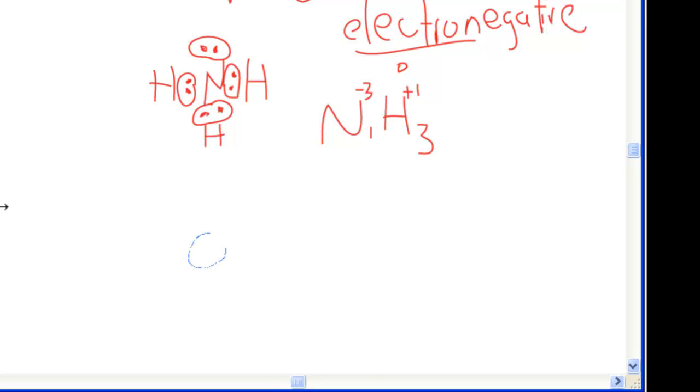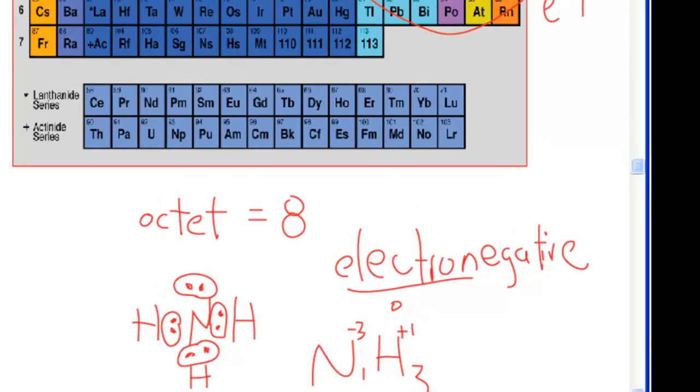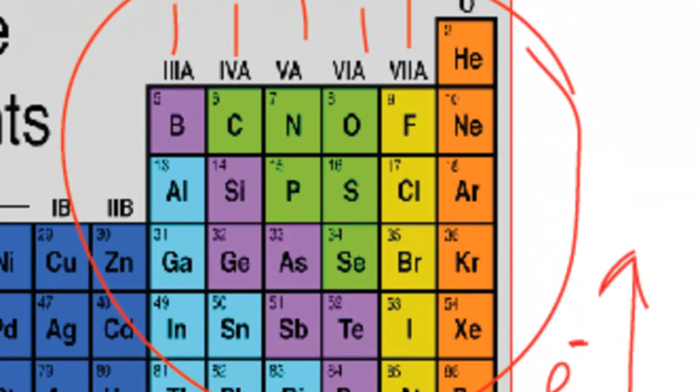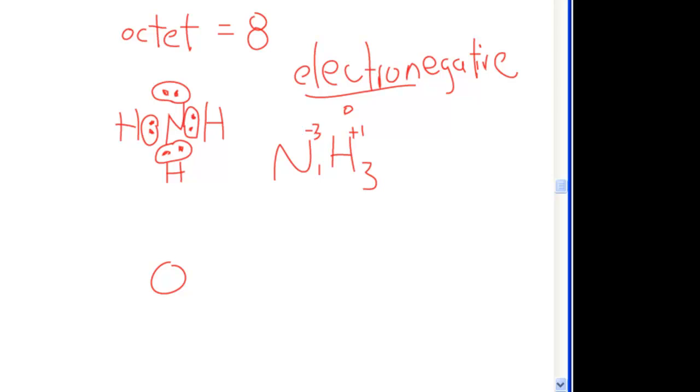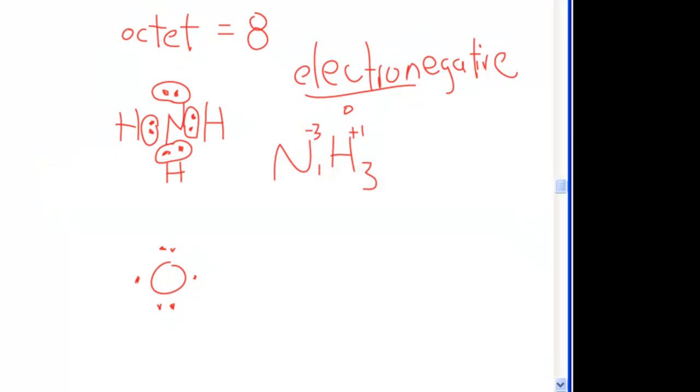Let's try oxygen, which is group six, right? How many valence electrons? Well, you guessed it, six. One, two, three, four, and the last two five, six, evenly distributed throughout the atom.